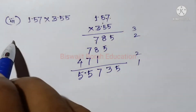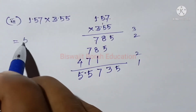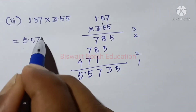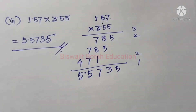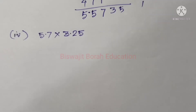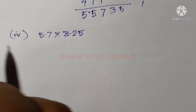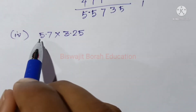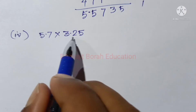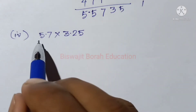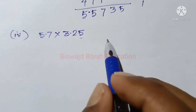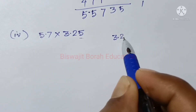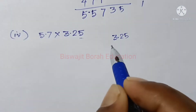I'll show you 5.5735 here. You'll see 5.5735. The next one: 2 is 5.7 into 3.25 — we will have 3.25 and we will have 5.7.